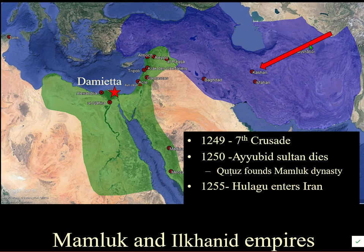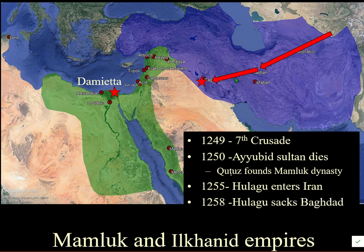Shortly after 1255, the Ilkhanids came into Iran — the Mongols who developed a nation-state in present-day Iran. The leader was Hulagu. The Mongols established a political entity there and then went forward to sack Baghdad, killing the last Abbasid caliph, although some members of the family escaped and became caliphs in Mamluk Egypt.